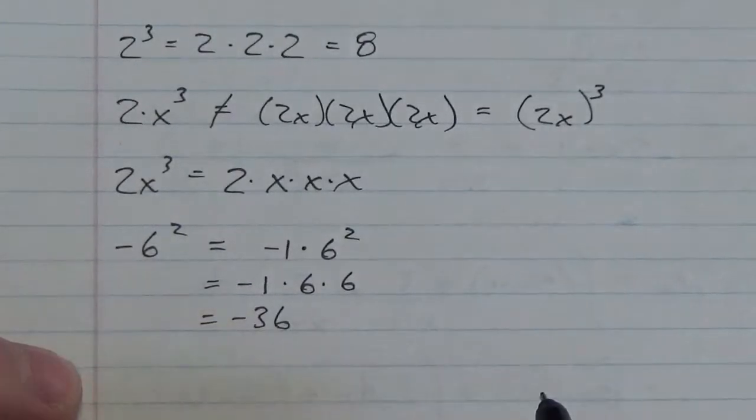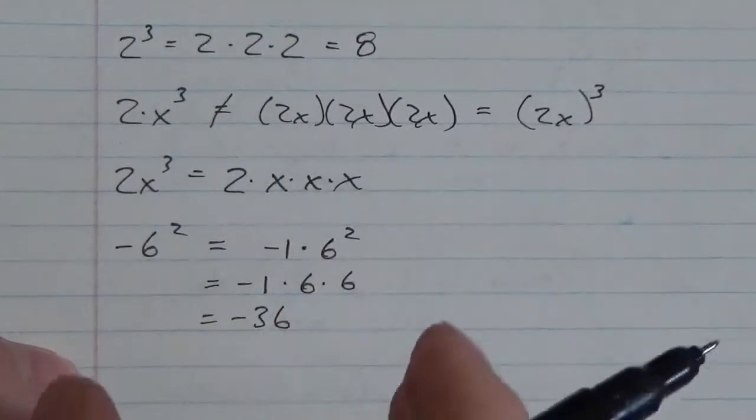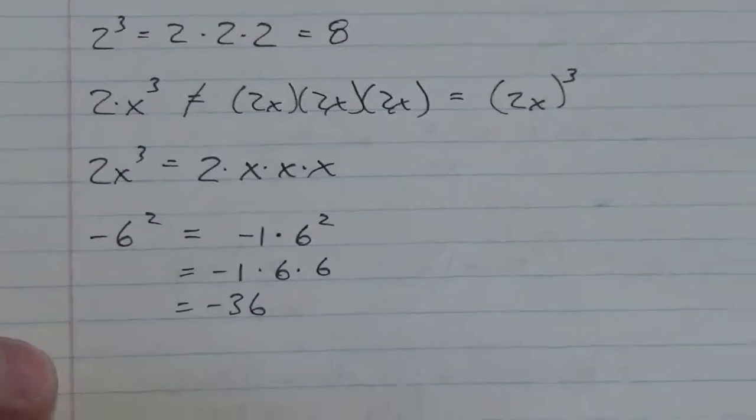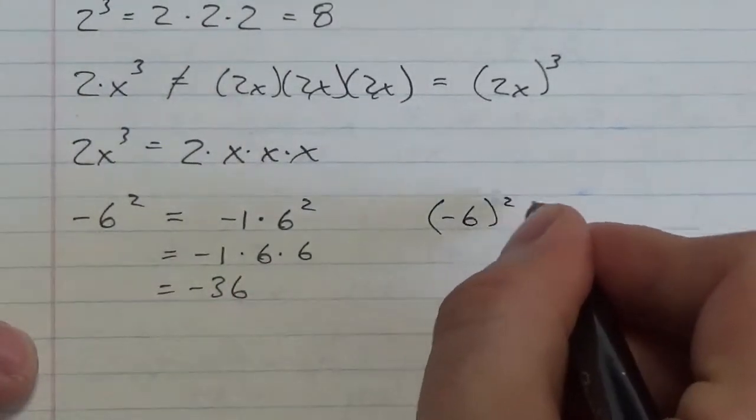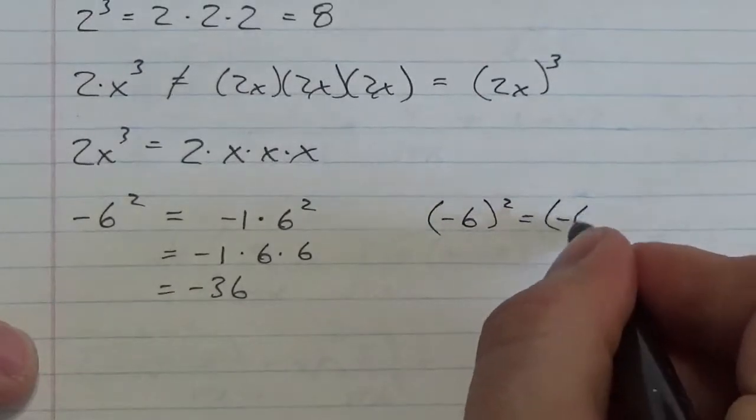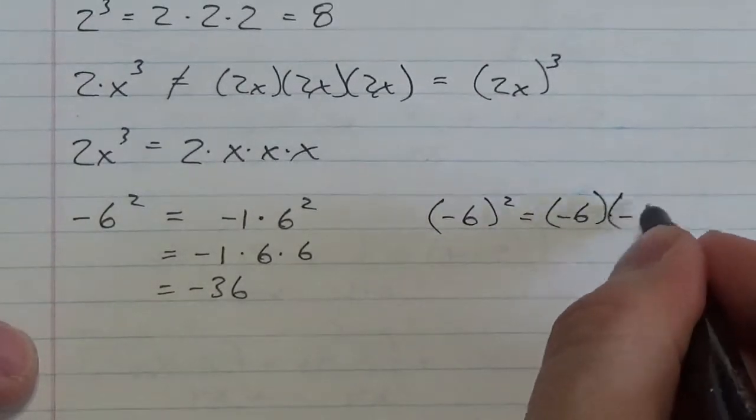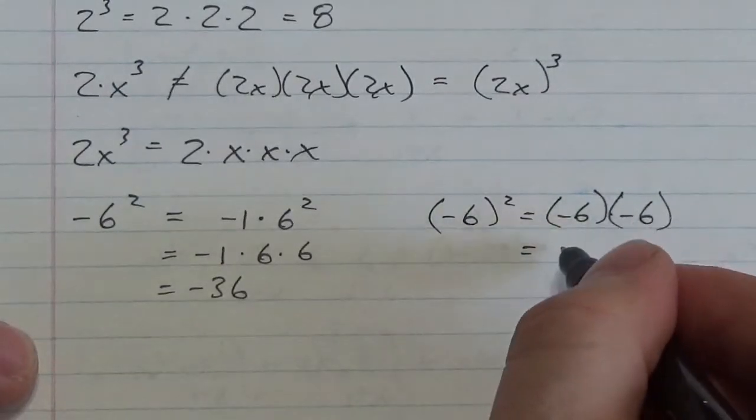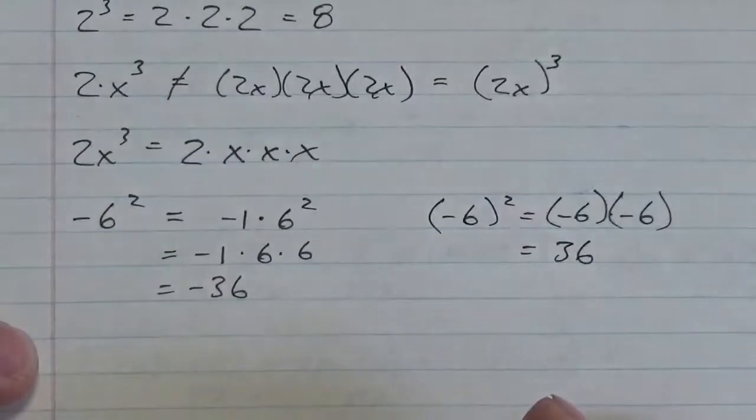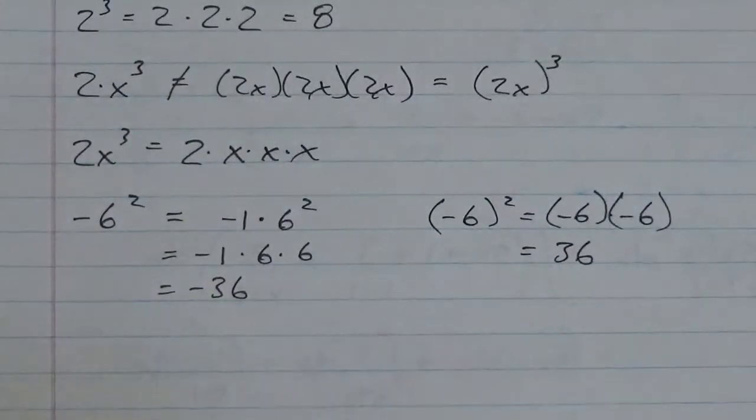If the intention was that this is going to be positive, then we would have had to put parentheses around that, in which case this becomes negative 6 multiplied by negative 6. The negatives in this case would cancel, and 6 times 6 is 36. So just want you to understand what a power is and how the notation works.